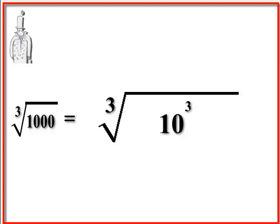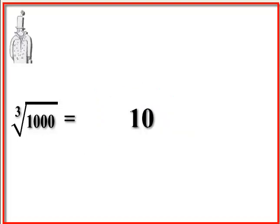And here comes the same thing. This exponent of three is going to cancel out this third cubic radical, and they cancel each other out. So it leaves you with an answer of ten.